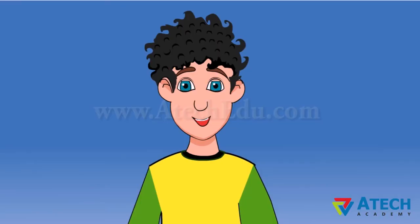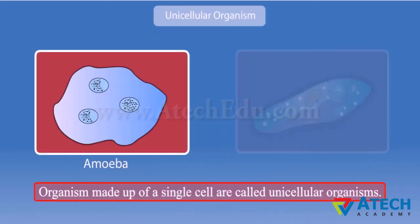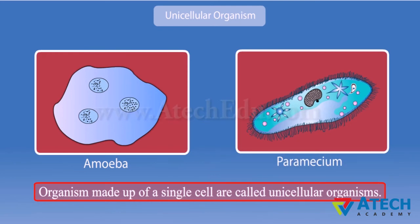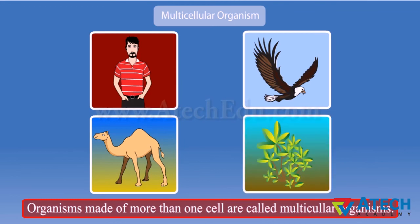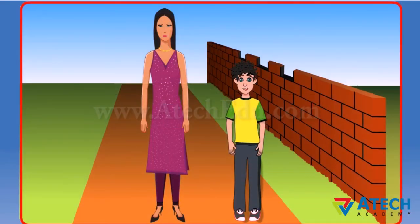Do all organisms have the same number of cells? No. Some organisms are made up of a single cell and are called unicellular organisms. Amoeba and paramecium are examples of unicellular organisms. Some organisms are made up of more than one cell and are called multicellular organisms. Human body, birds, animals, and plants are multicellular organisms.